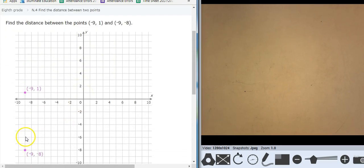Vertical, so 1, 2, 3, 4, 5, 6, 7, 8, 9 units.